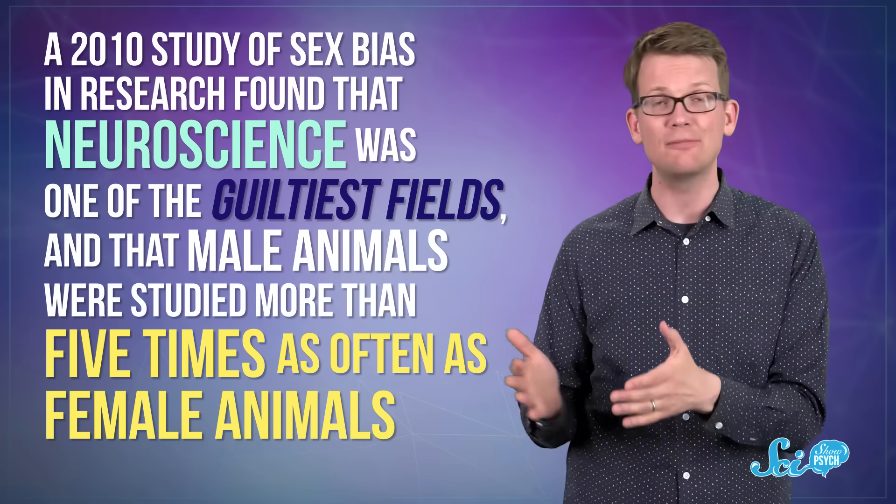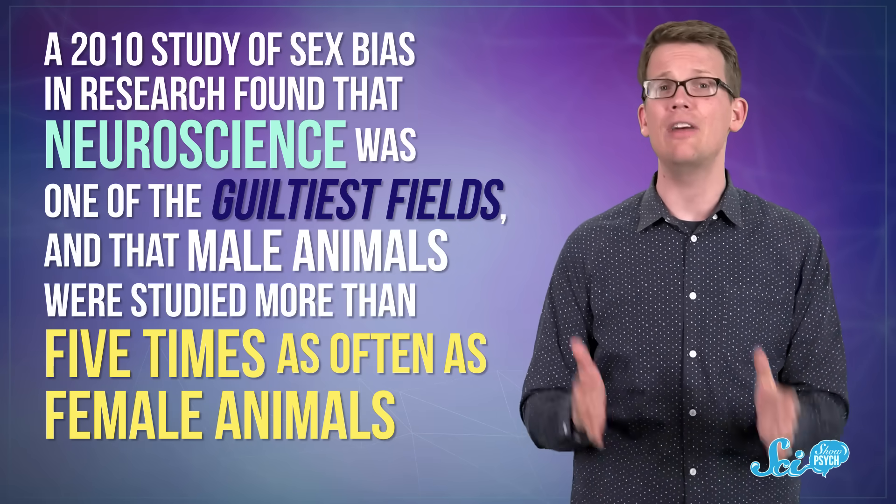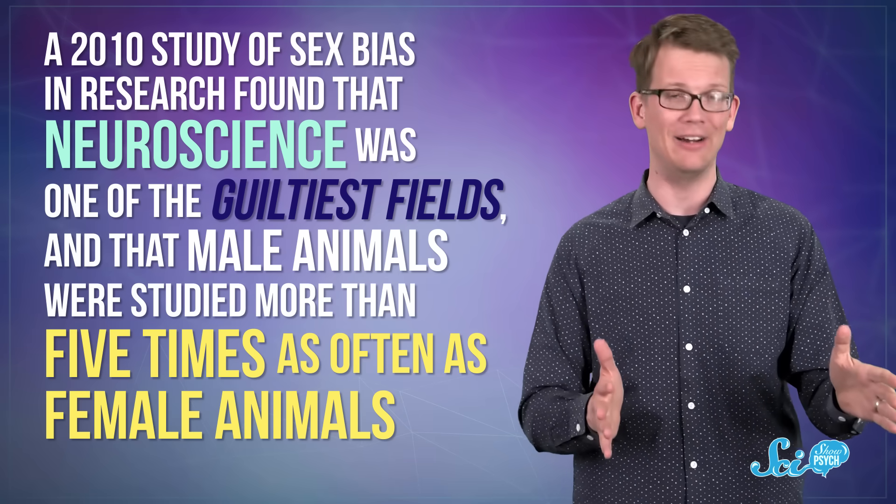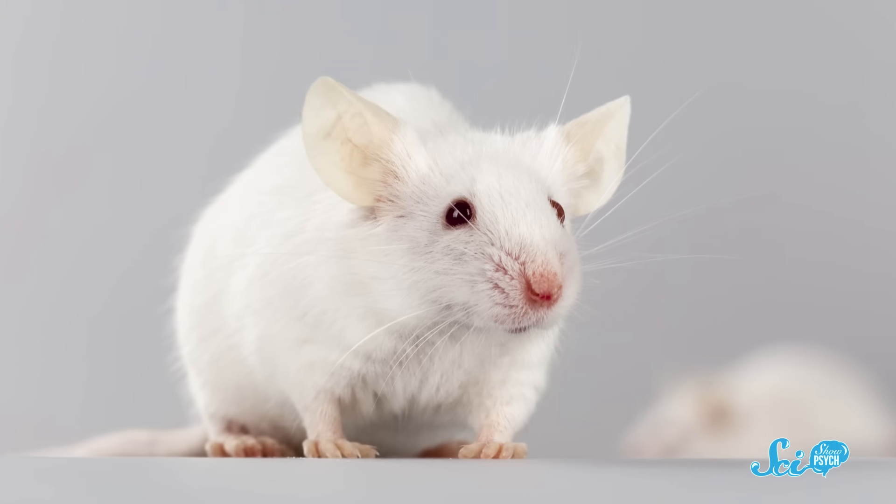And then there's the fact that most of science just doesn't use female animal models. A 2010 study of sex bias in research found that neuroscience was one of the guiltiest fields, and that male animals were studied more than five times as often as female animals. There are reasons for this, including the fact that lab mice go into heat every four to six days. I mean, if you thought PMS once a month was bad, try factoring that kind of hormonal haywire into your nicely controlled scientific experiment. But if human male and female brains are different, then not studying female animal models is a pretty big problem.